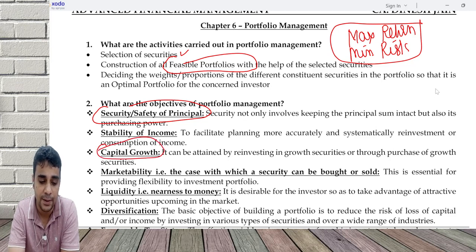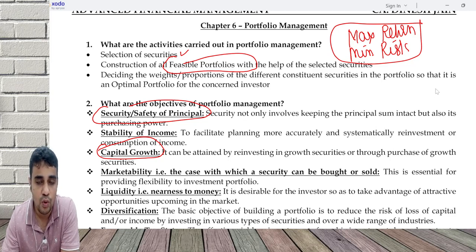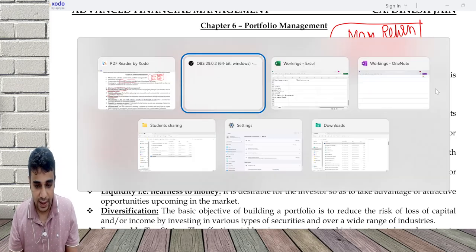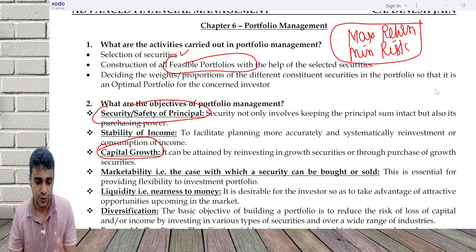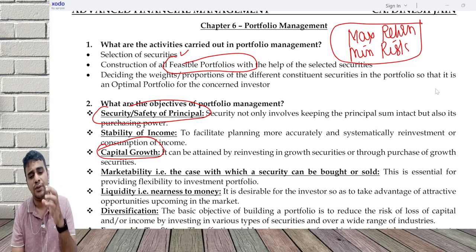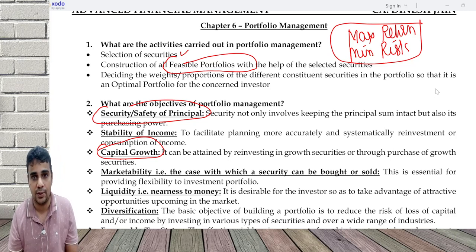Capital growth means investing in growth securities which have a huge potential for upward movement — that is, share prices will go up, which leads to improvement in overall portfolio valuation. Marketability and liquidity are two important parameters. Marketability is my ability to buy or sell a security. Whenever I buy a security, I need to ensure it should be easy to buy and sell. In the market, there should be a large number of buyers and sellers. If you have an illiquid security, you will get stuck with it.